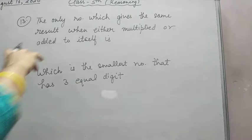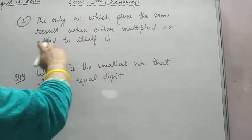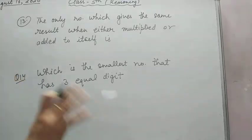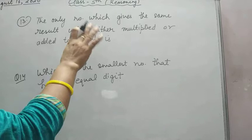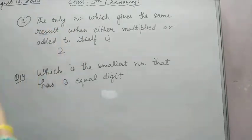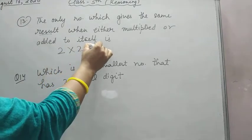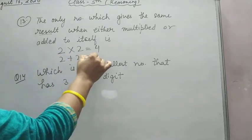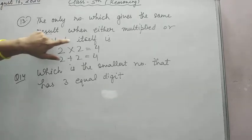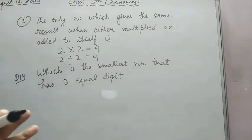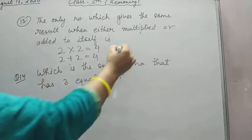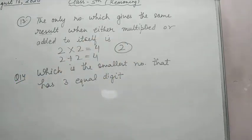Now see question number 13: The only number which gives the same result when either multiplied or added to itself. Which number when you add or multiply will give you the same result? So this is your answer - two. Two is the number.